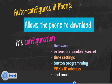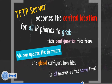Once the phone gets the TFTP IP address, it can download its configuration and firmware — a file containing an extension number and secret, time settings like Pacific Standard Time or Mountain Standard Time, custom programming of the buttons on the phone, the PBX's IP address, and a lot more. The TFTP server becomes the central location for all IP phones to grab their configuration files from. Now we've got one area where we can update firmware and global configuration files to all phones at the same time.